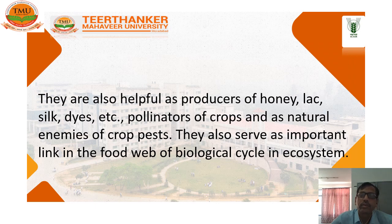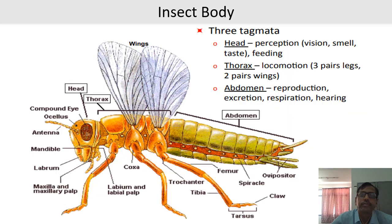They are also helpful as pollinators of crops, producers of honey, lac, silk, dyes, etc., and as natural enemies of crop pests. They also serve as an important link in the food web and biological cycle in the ecosystem. Here you can see the image of an insect body. There are 3 tagmata: head, thorax, and abdomen.